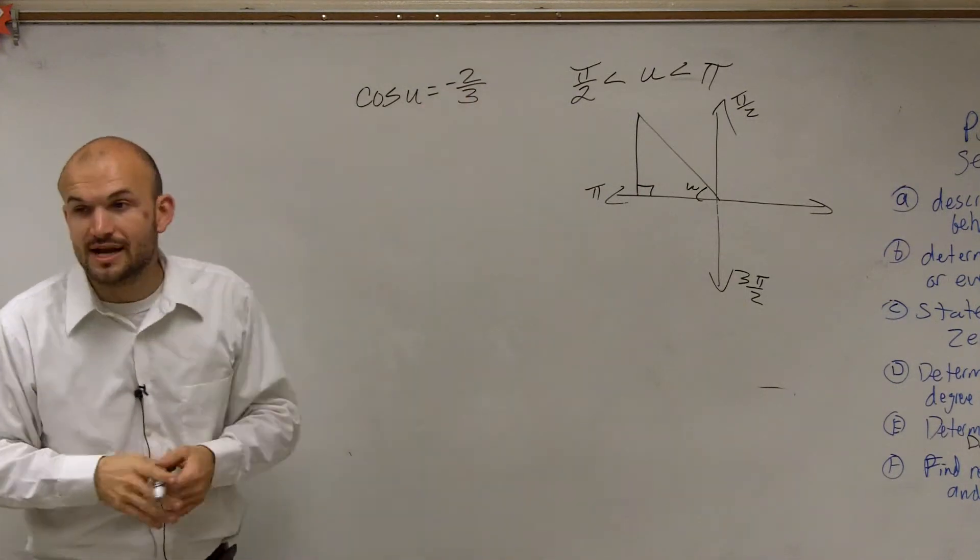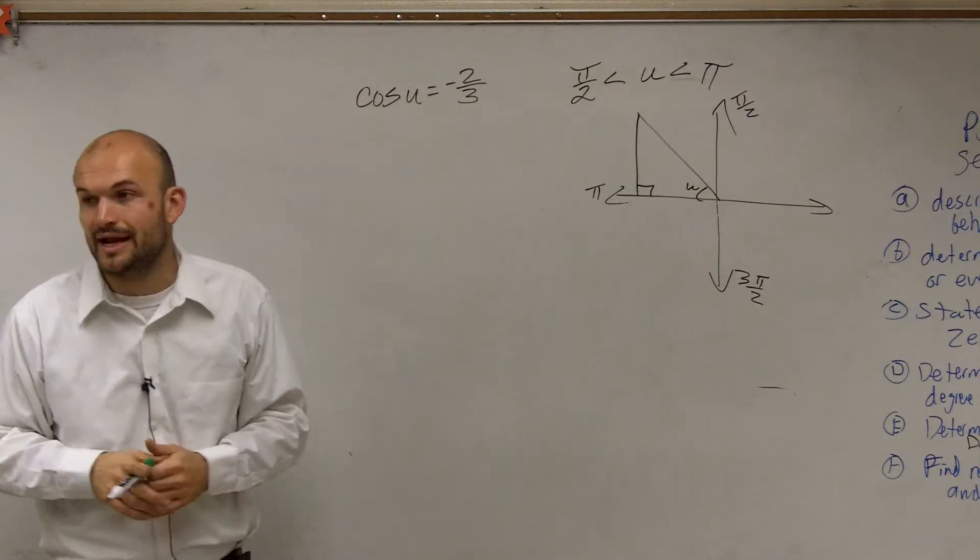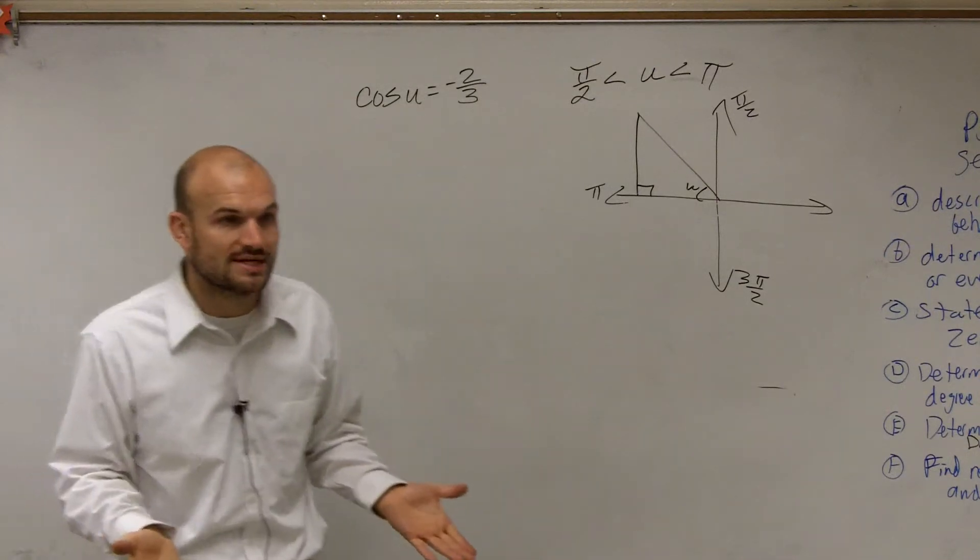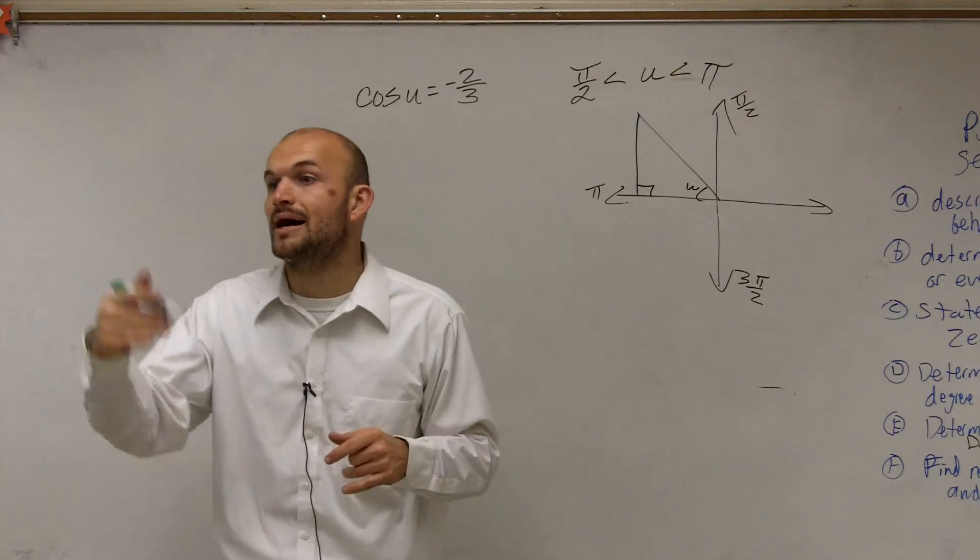Now it says my cosine of u, so my cosine of my angle, is equal to -2/3. Remember, cosine when dealing with the triangle is adjacent over hypotenuse.